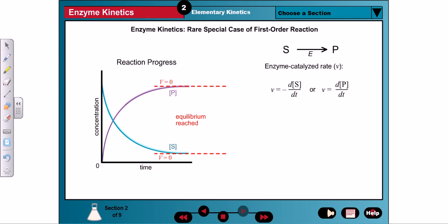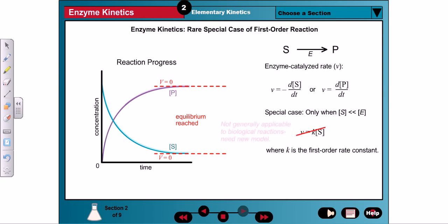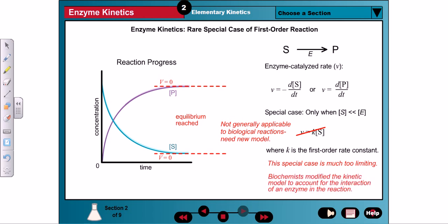The rate equation for an enzyme-catalyzed reaction with a single substrate is the same as the rate equation for the simple non-enzymatic reaction, but only when the concentration of substrate is so low that the enzyme has very little chance to convert it to product. Under these unique conditions, it appears that the reaction is first-order with respect to substrate. However, this special case is much too limiting and rarely applies in biological and experimental systems. Consequently, biochemists must use a different model to describe the kinetics of biological reactions catalyzed by enzymes.